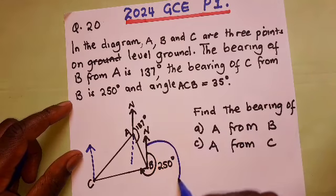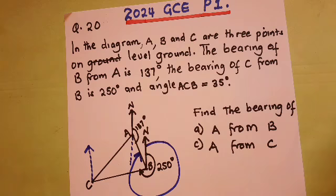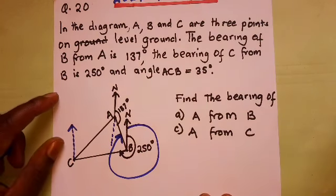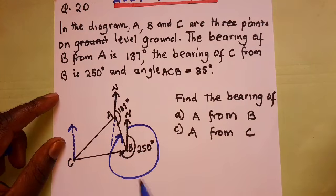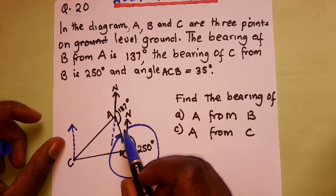The bearing of A from B is this one here. This is the bearing of A from B. But as you may know, if we know what the smaller angle here is, then it will be very easy for us.